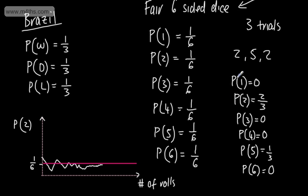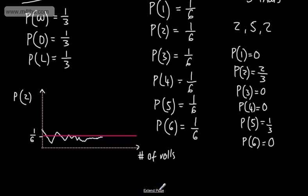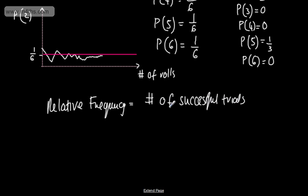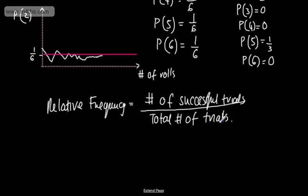So this is relative frequency, or experimental probability. The relative frequency is given by: the number of successful trials divided by the total number of trials. That's nice and straightforward — that's relative frequency, or experimental probability.